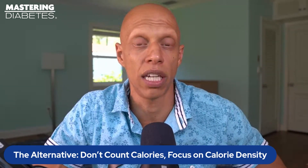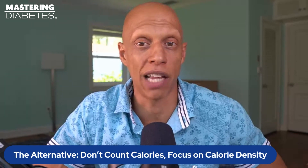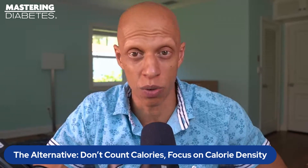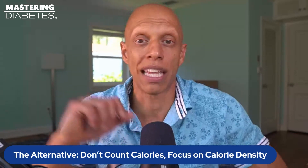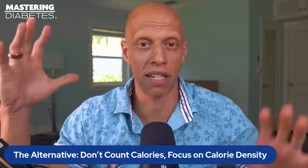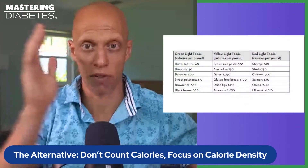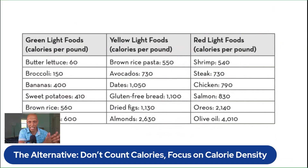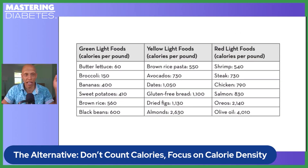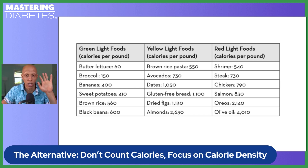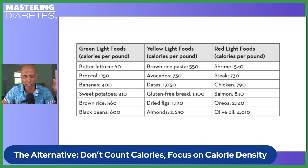Calorie density is also commonly thought about as the number of calories per pound of edible food. The calorie density of commonly eaten foods spans a wide range — from as low as 60 calories per pound all the way up to 4,010 calories per pound. There's a table on screen to help illustrate that span among foods you might routinely encounter.